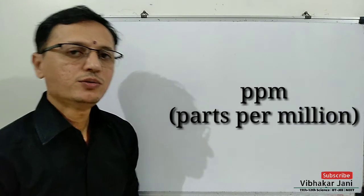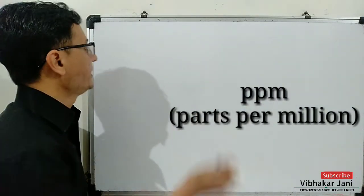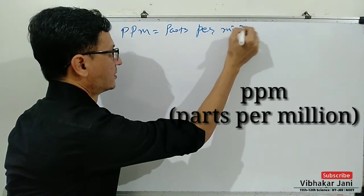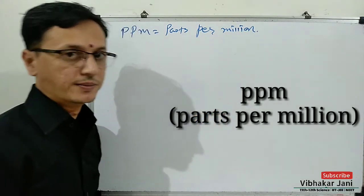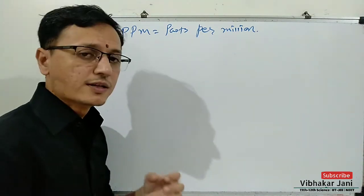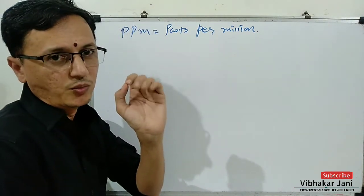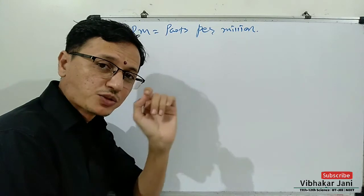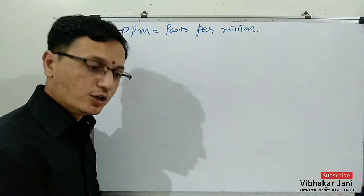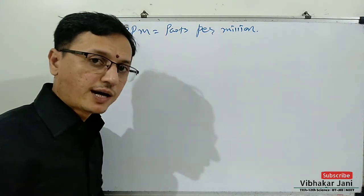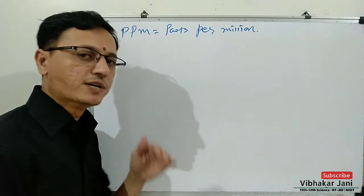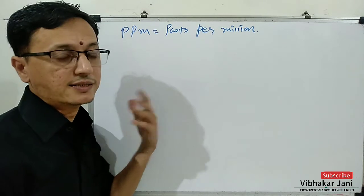Take your notebook and pen and let us start. The word PPM stands for parts per million — that means some parts out of a million. When the concentration of a solution is very small, it is measured in PPM. The pollutants present in our air and water are measured in PPM because their concentration is very low. So when concentration has a very small value, PPM should be used as the term of concentration.